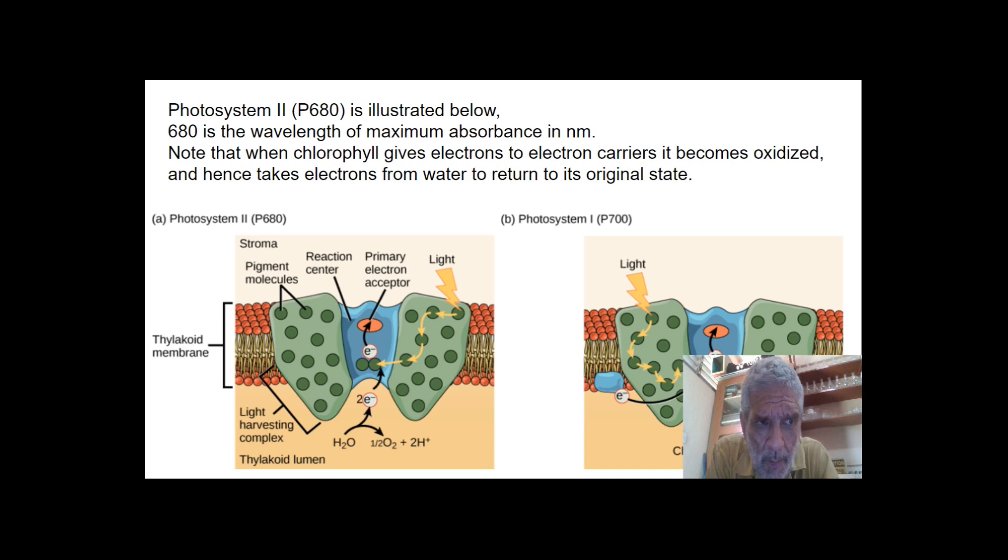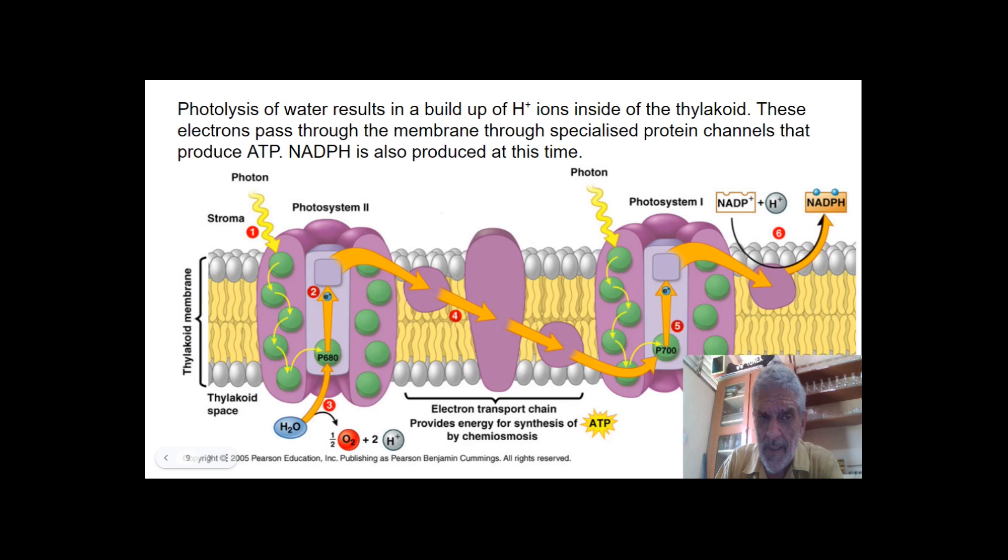And then you have photosystem II which is illustrated below. This is photosystem II or P680. In this system, P680 wavelength of maximum light is absorbed in nanometers. When the chlorophyll gives electrons to the electron carriers, it becomes oxidized. And hence it takes electrons from water to return to its original state. These are light harvesting pigments. These are going to carry it to the reaction centre. Since electrons are being lost, they need to be returned by the splitting of water.